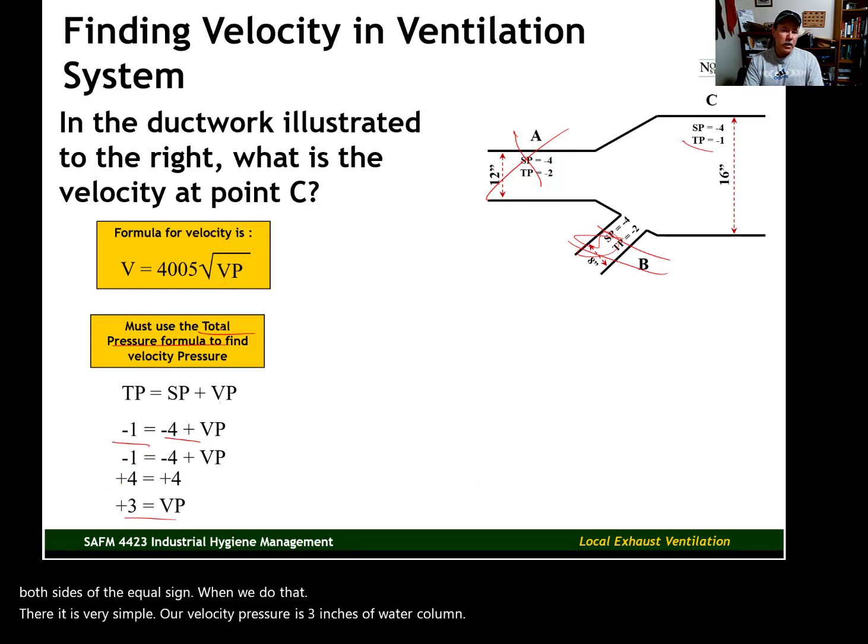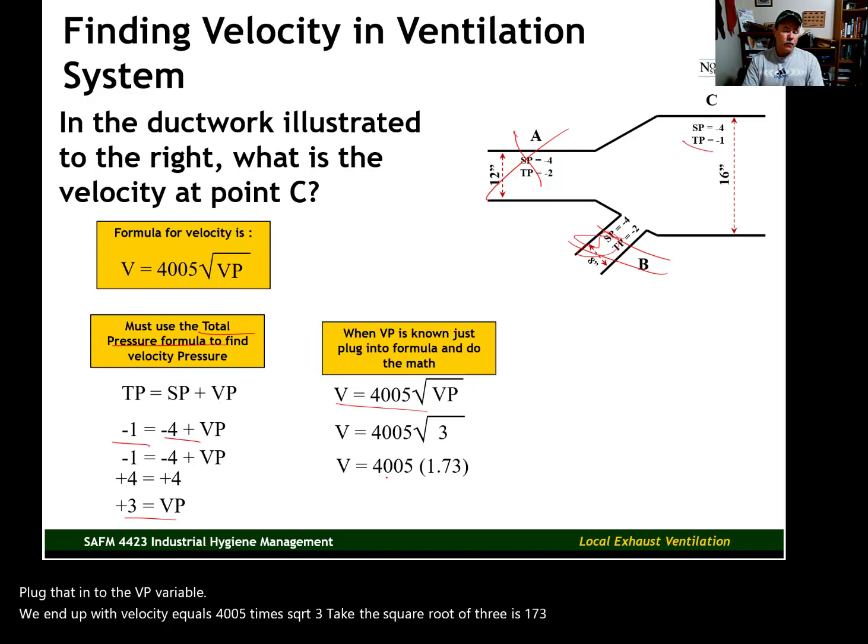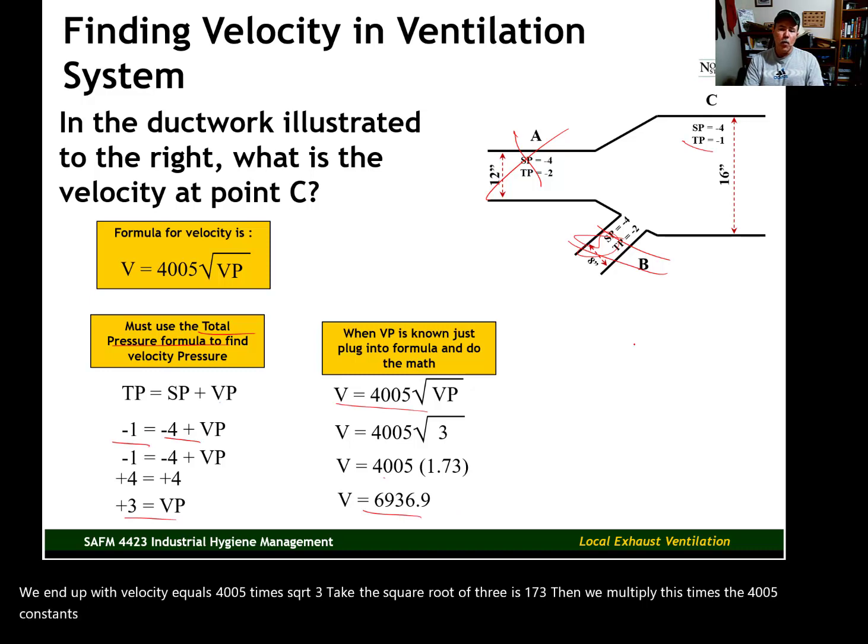Now that we have this, we can go back up to this formula, plug that in to the VP variable. We end up with velocity equals 4005 times the square root of 3. Take the square root of 3, it's 1.73. Then we multiply this times the 4005 constant, and there's our velocity at point C within this ventilation system. Air velocity at point C is 6,936.9 feet per minute.